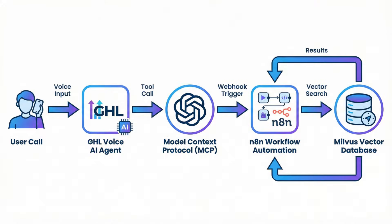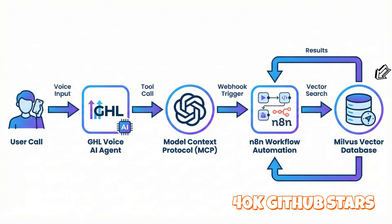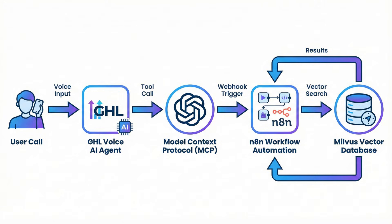In the next 15 minutes, we're building this exact system: a voice AI agent that understands natural language, image search that sees what 'modern kitchen' means, and hybrid search combining semantic, keyword, and visual similarity. All powered by Milvus, the number one open source vector database with 40,000 GitHub stars, trusted by over 10,000 companies to handle billions of vectors with sub-10-millisecond response times. The starter code is in the description, so let's go build this production-ready system.